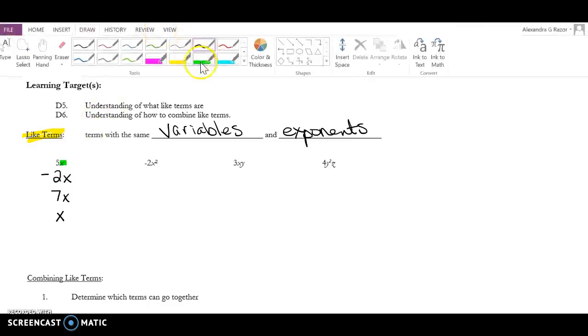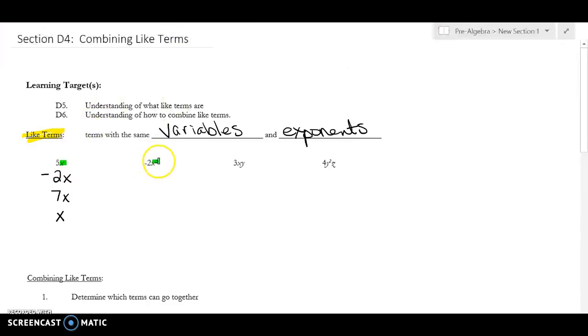For the second problem here, this has an x², so that means all of our like terms have to have an x². So I can have 5x², I can have 101x², I can have -10x², I can even have just an x², but if you notice they all have x². Those are like terms.